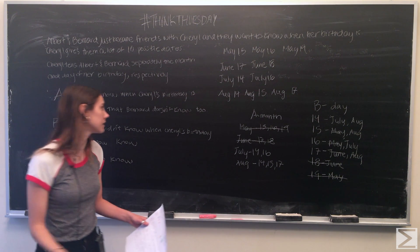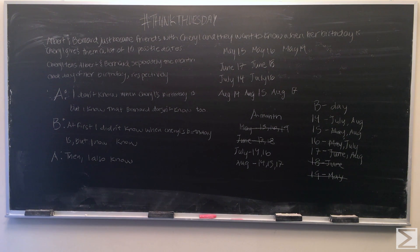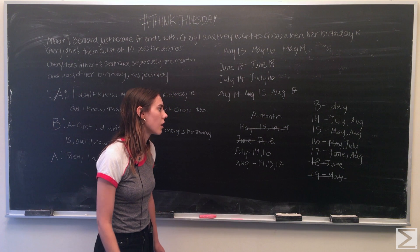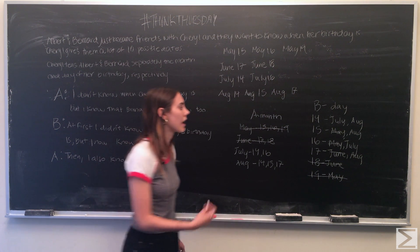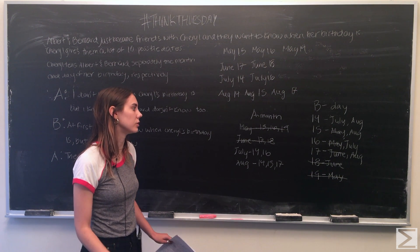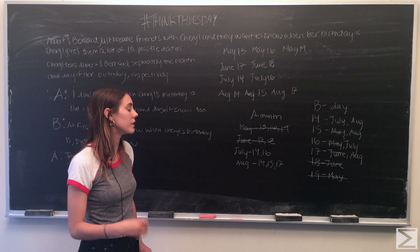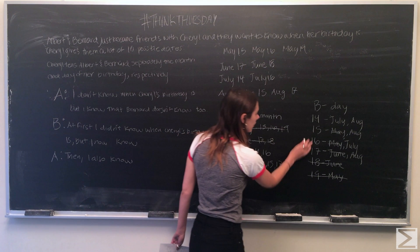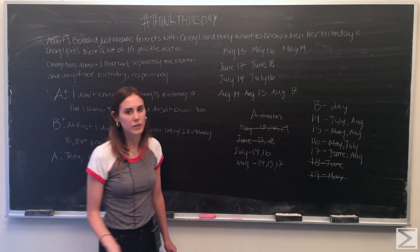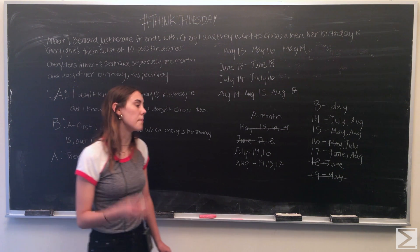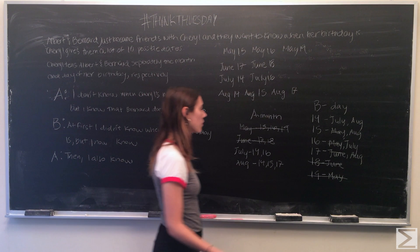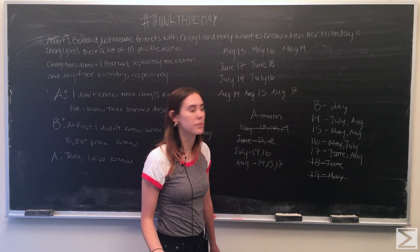Moving on to the second statement: Bernard says at first he didn't know when Cheryl's birthday was, but now he does. What Bernard is saying is that at first the date he was given had two possible months, so he couldn't determine which. But after crossing out the months from Albert's statement, he can now determine the date. That means it has to be one of three options — the 15th, 16th, or 17th. We know that if he'd been given the 14th, he still wouldn't be able to determine the month. Since he says he now knows, we can cross out the 14th as a possible date.